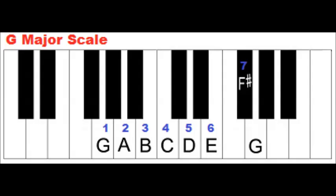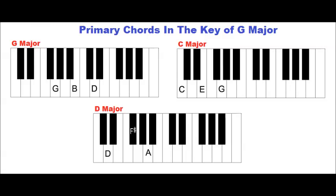Notes 1, 4 and 5 are G, C and D. Therefore, the primary chords in the key of G major are G major, C major and D major.